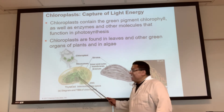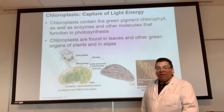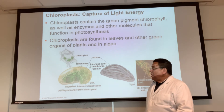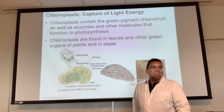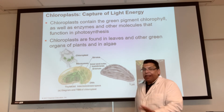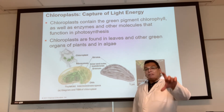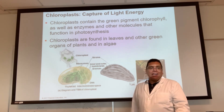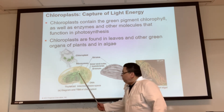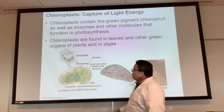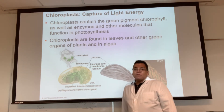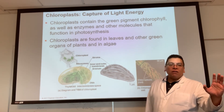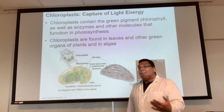The sacs are thylakoids and the stack is the granum — they look like pancakes on a plate. Each pancake is a thylakoid, and the stack is the granum. There's fluid-filled space in there called the stroma — that's like the syrup on the pancake. Analogies work beautifully here.